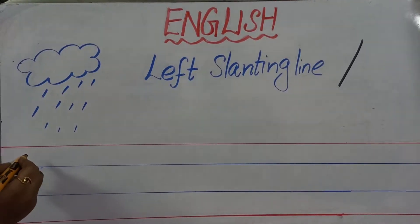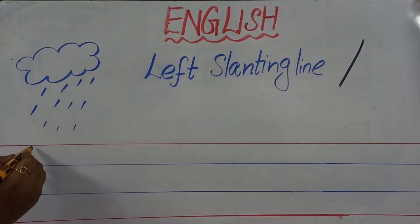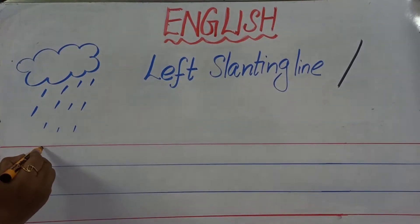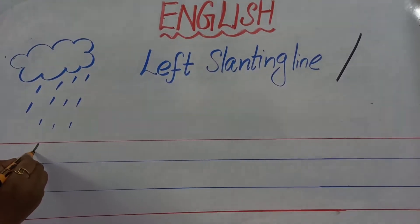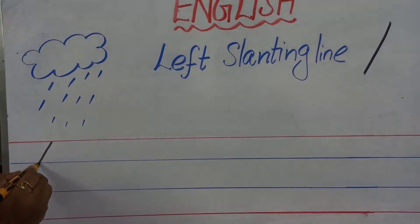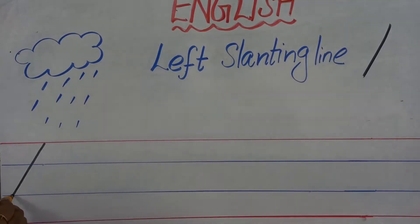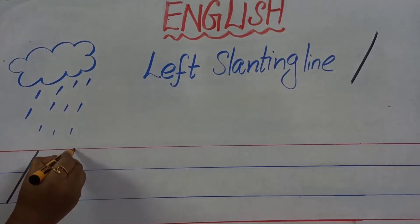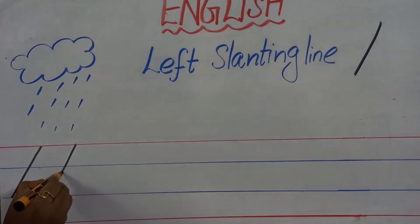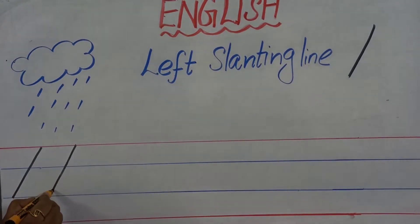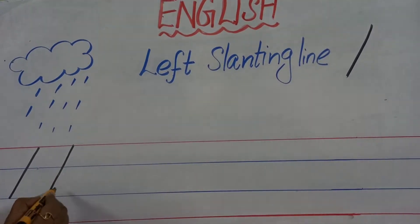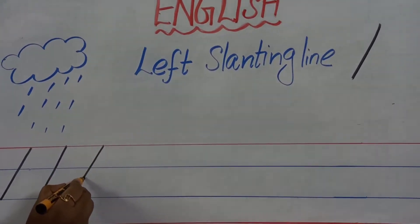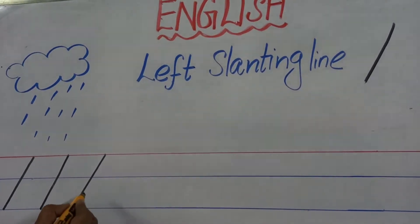Now shall we write? Ready all of you? Watch carefully. Start from the right side — red line, blue line, blue line, stop. One more time: red line, blue line, blue line, stop. Red line, blue line, blue line, stop.